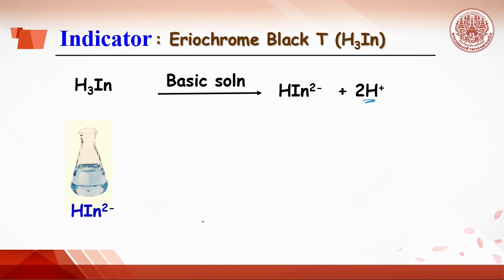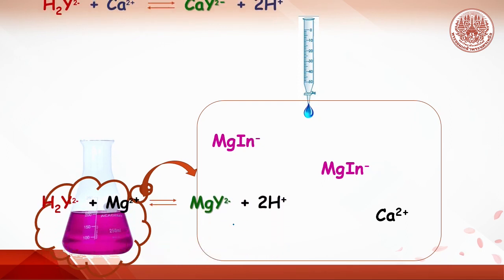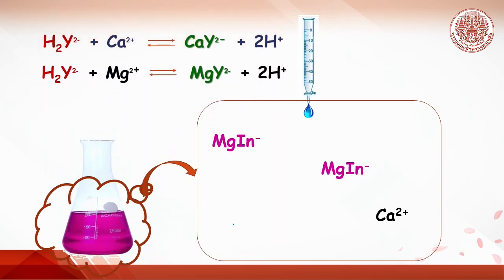In the presence of magnesium ion, this indicator will form a stable wine-red complex. As EDTA is added, it will react with free calcium or magnesium ion, leaving the MgIn complex alone until no more free calcium ion is left in the solution. The EDTA will then react with magnesium ion in the MgIn complex. The indicator reverts to its acid form HIn, which is sky blue.